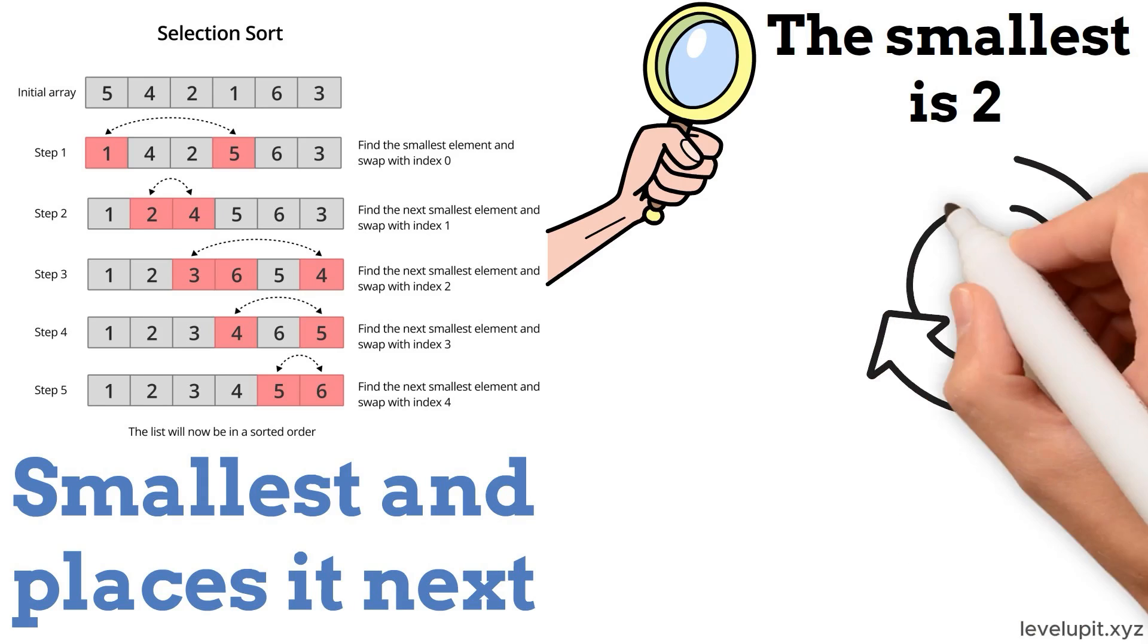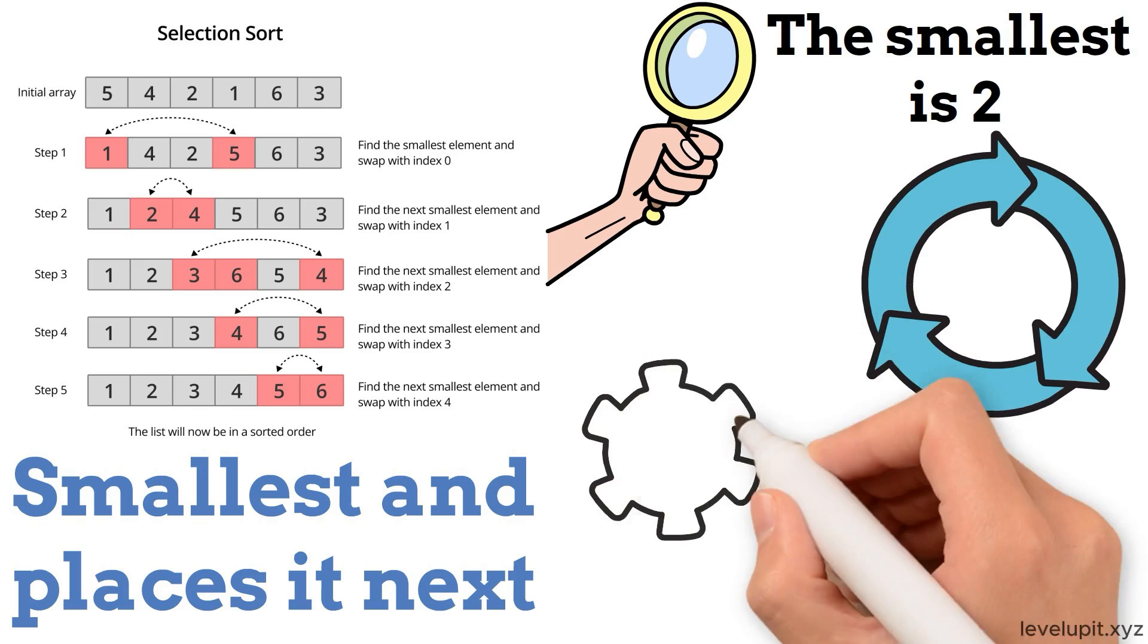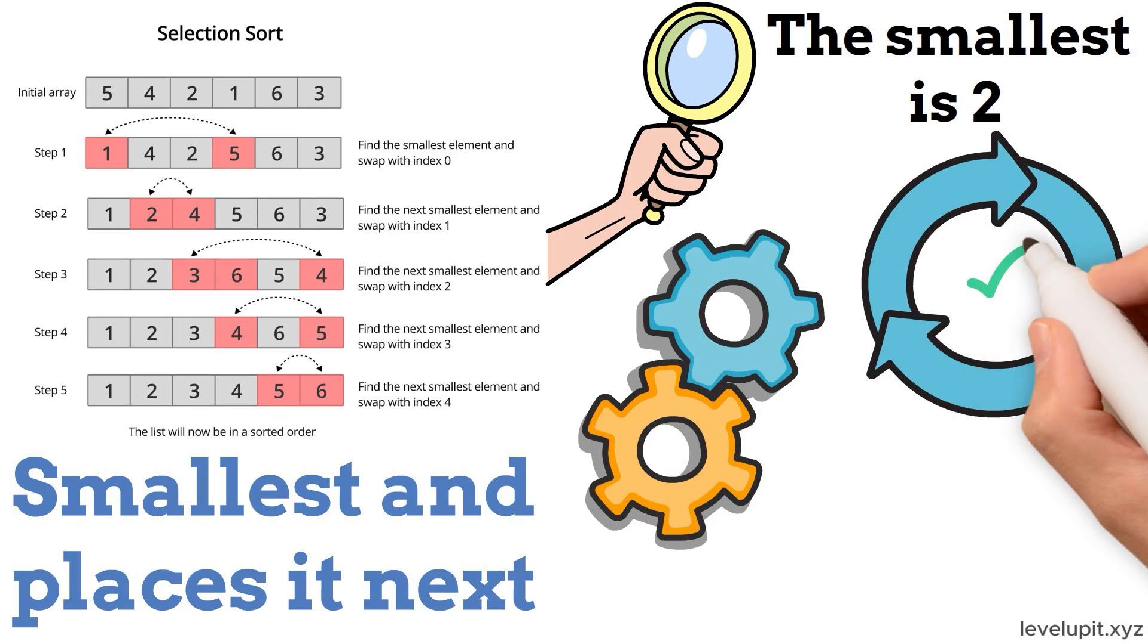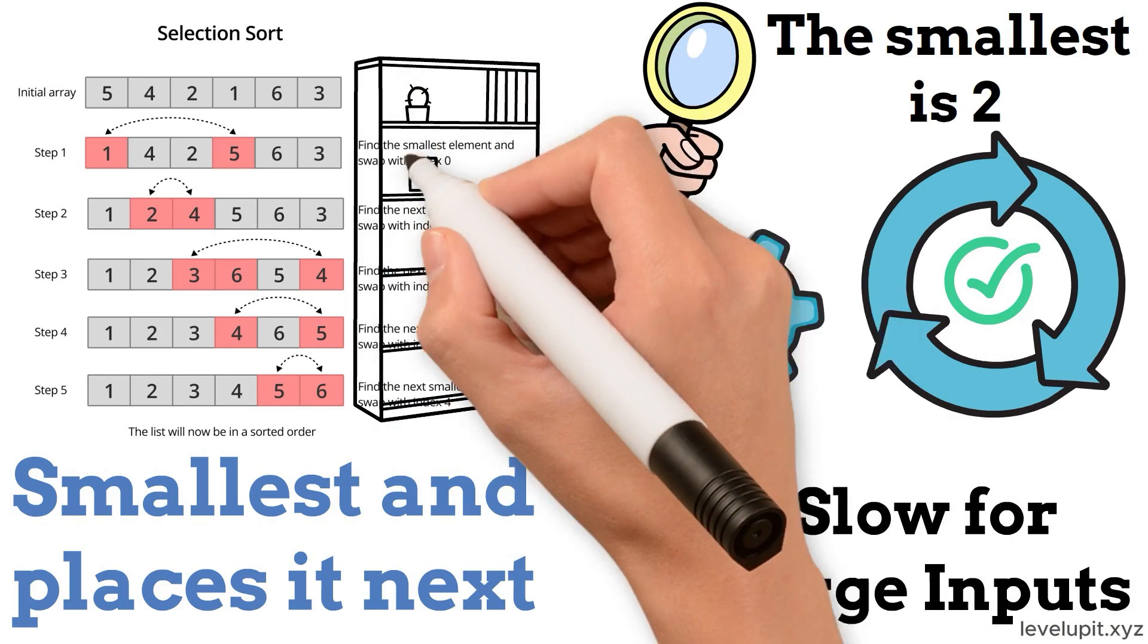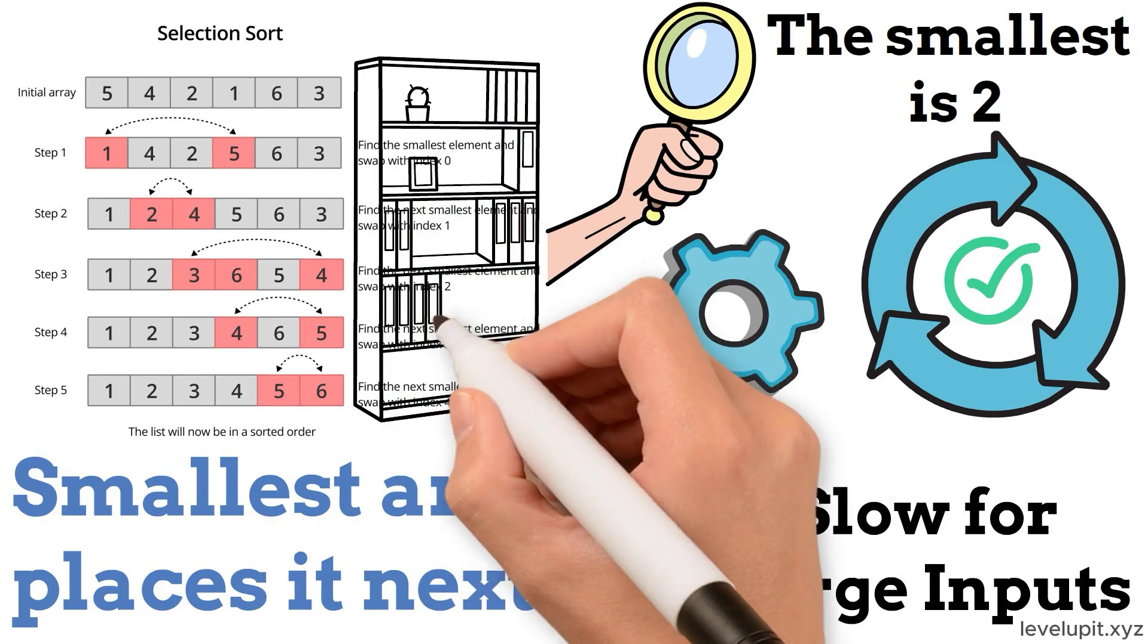It does few swaps, which can be nice for systems where swapping is expensive, but it still scans repeatedly and is slow for large inputs. Think of sorting books on a shelf by repeatedly picking the lightest book and placing it at the left.